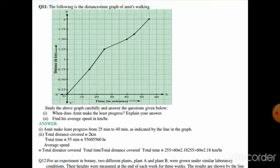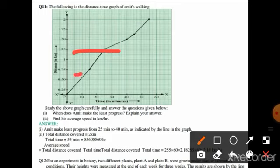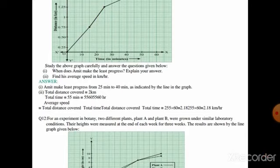From this graph we can see that Amit makes the least progress from 25 minutes to 40 minutes. When we look at the graph from 25 minutes to 40 minutes, the progress is least. So in the first case we can say the least progress is shown from 25 minutes to 40 minutes.